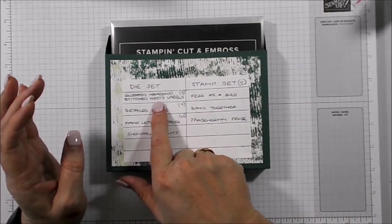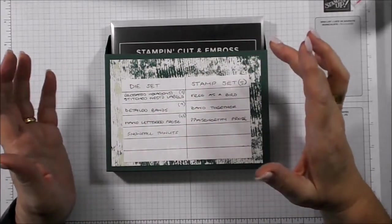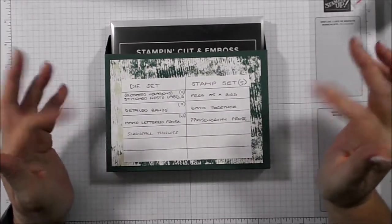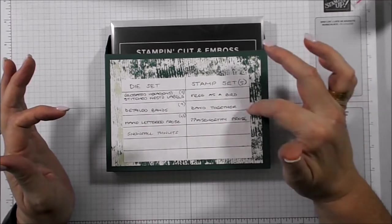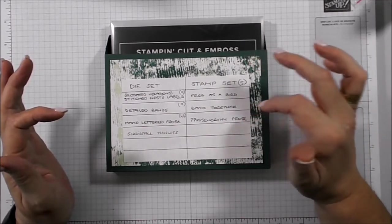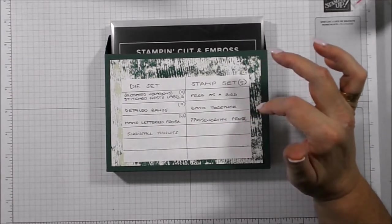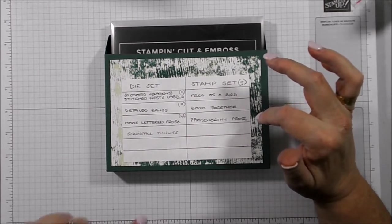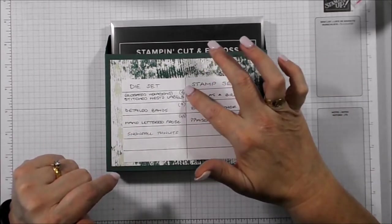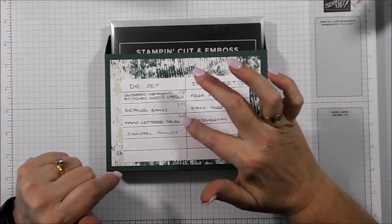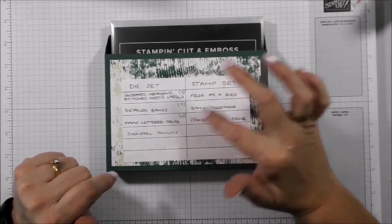I've got the Elongated Hexagons, which are the Stitched Nested Labels dies from the Free as a Bird Ballad Suite. Then I've got the Detailed Bands from Band Together, the Hand-Lettered Prose, which is the Praiseworthy Prose Bundle, and the Snowfall Thinlets. Now these little numbers at the side here indicate how many dies are in each set.